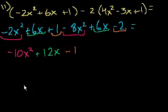And then that is choice. Let's see. Let me scroll down. That is choice D. Minus 10x squared plus 12x minus 1. Choice D.